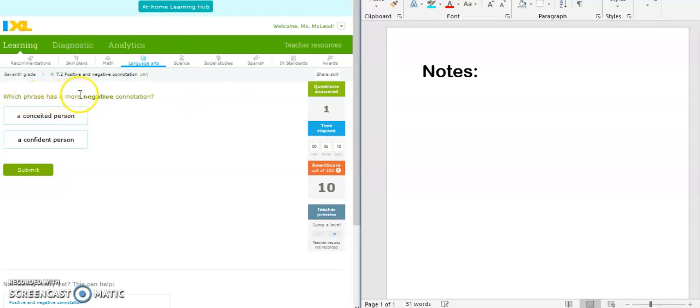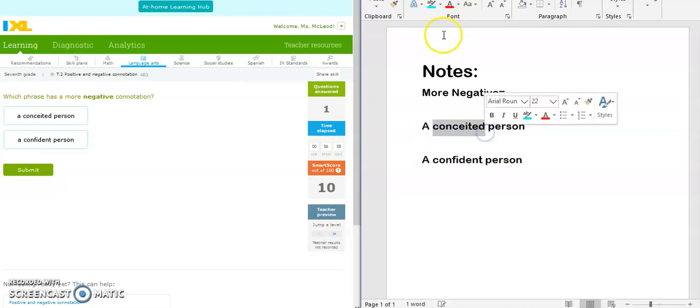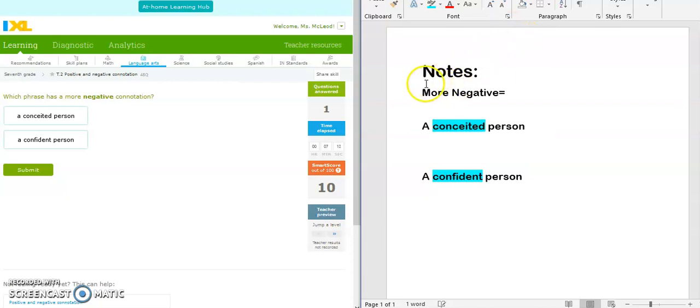Which phrase has a more negative connotation? So again, we're looking for negative. Let's see what my choices are. A conceited person or a confident person. Now, I notice that my two options are the same except one word. Option A, conceited. Option 2 is confident. So now I need to know the difference between these because I'm looking for more negative.